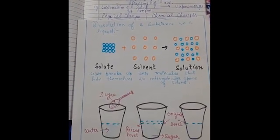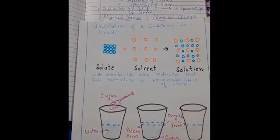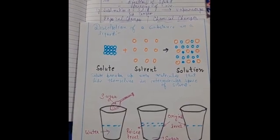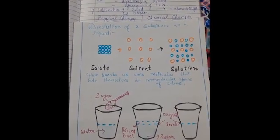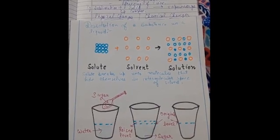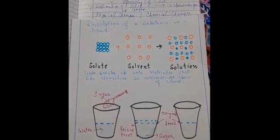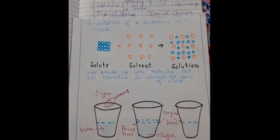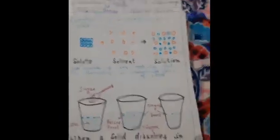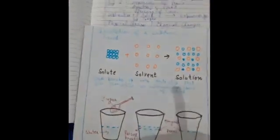Hello dear students, I am Manoj Bharti and I am going to teach chemistry to class 7. In the previous video we discussed when a solid dissolves in liquid, the volume of the liquid remains unchanged. In that video we compared sugar with the solute particles and water with the solvent particles. Now in this video we will discuss physical changes and chemical changes.